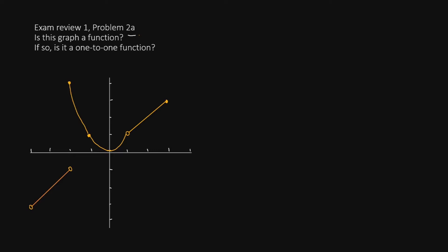Is this graph a function? And if so, is it a one-to-one function? To tell if a graph is a function, we do something called the vertical line test. We're going to see if there's any vertical line we can draw that would cross this function twice. If it always crosses once and once only, then it is a function. If it crosses twice or more, then it's not a function.